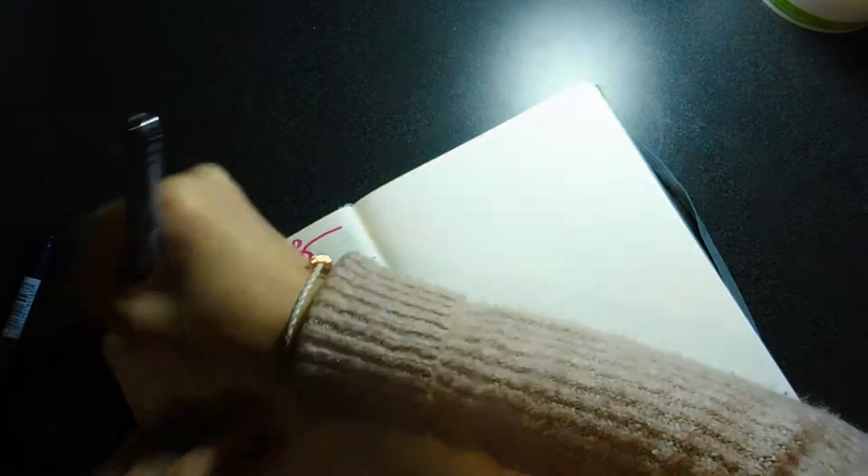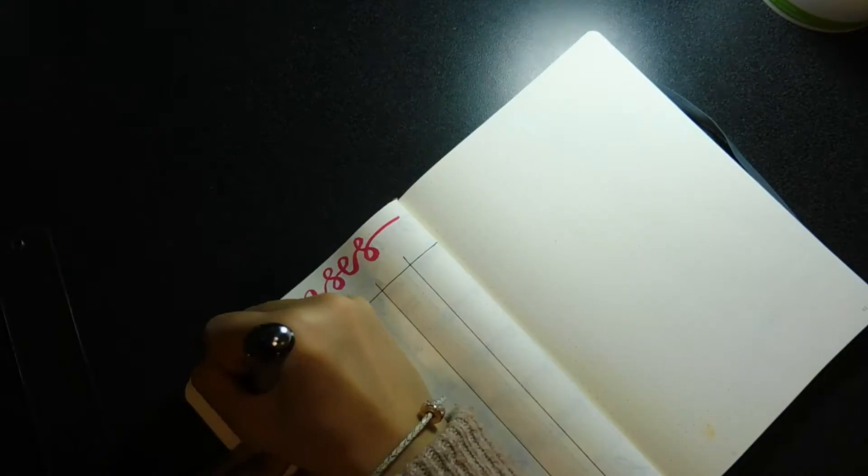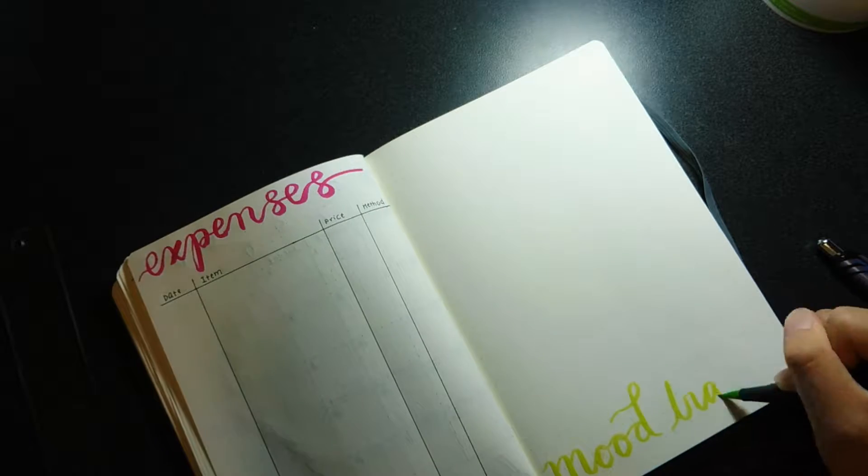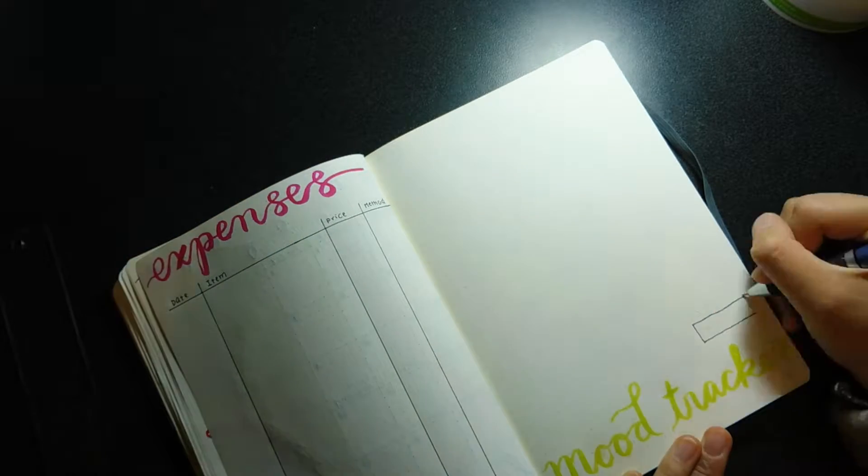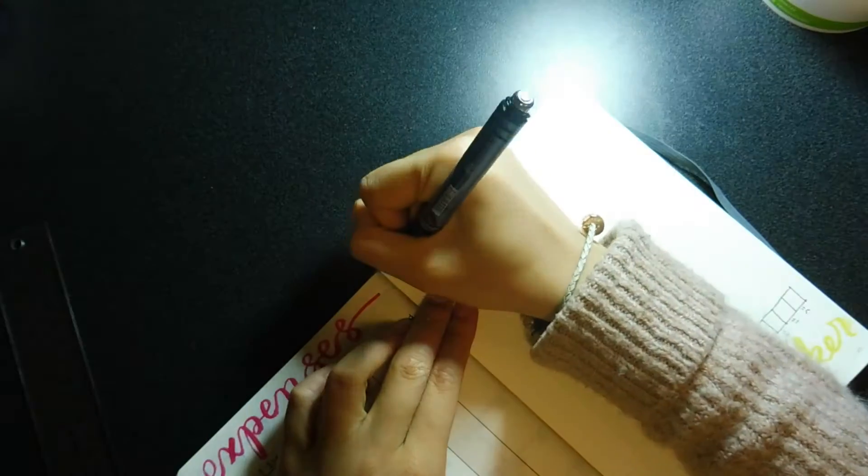Next I'm working on my expense tracker just so I can track what I spend my money on. It's really simple. I basically just have four categories: date, item, price, and method of pay, because I like to keep track of when I use my debit card, when I use cash, etc.